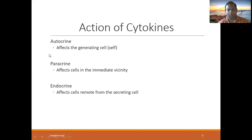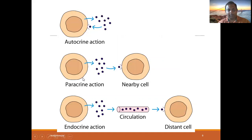Depending on the action, cytokines can act in three ways. Autocrine — they affect the generating cell itself. Paracrine — they affect nearby cells. Endocrine — they affect distal cells by going through the circulation.